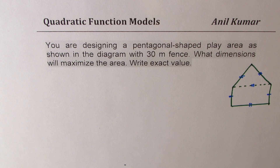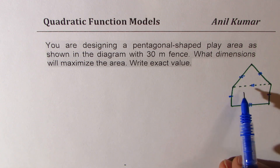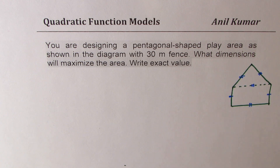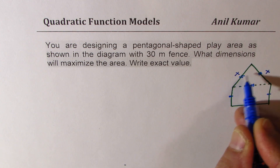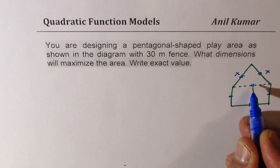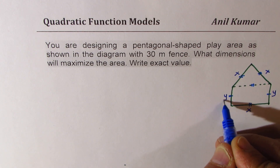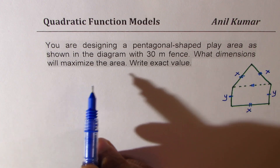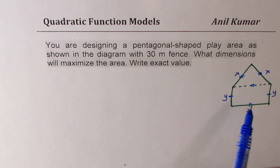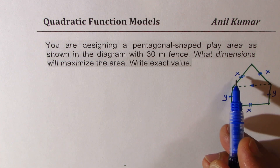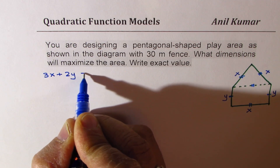We want to maximize the area and we are given 30 meters of fence. We'll assume there is no fence in between — the dotted line indicates the boundary lines only. Let's say each side of the equilateral triangle is of length x; in that case, the rectangle's width along the top is also x. Let y be the width of the rectangle. From the given perimeter of 30 meters, we can write 3x plus 2y equals 30.